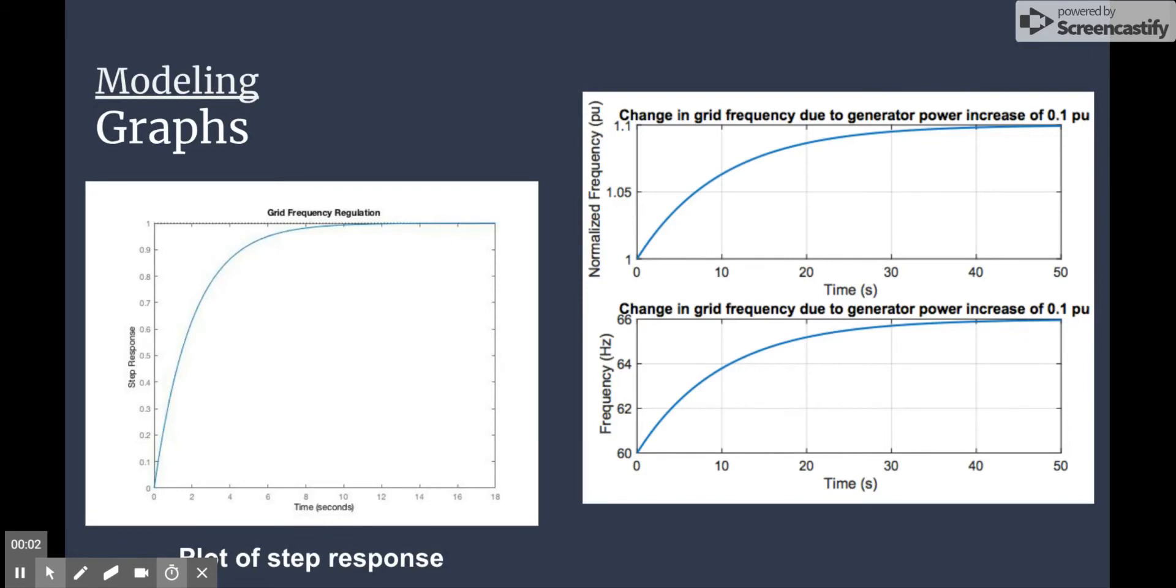Here we have the step response of our frequency regulator in open loop on the left. On the right, we have the frequency responses in both normalized and normal units, due to a 10% increase in power. These all look relatively similar, and you can see that over time, there's going to be asymptotic behavior.